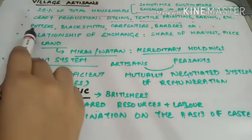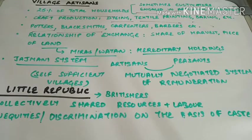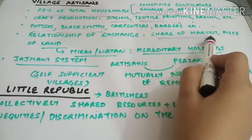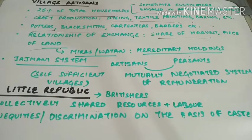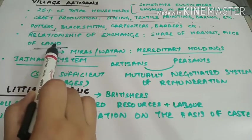Artisans are of different types — some are potters, some are blacksmiths or goldsmiths, some are carpenters, barbers, etc. Broadly, there were two different categories of people — artisans and cultivators — and many times these were overlapping. Artisans were compensated in a variety of ways: for example, they were given a share of harvest or a piece of land. When cultivators harvested their crops, they would provide a share of harvest to these artisans as remuneration. Sometimes they were also given land allotments, which became hereditary holdings that artisans could pass on to their children.